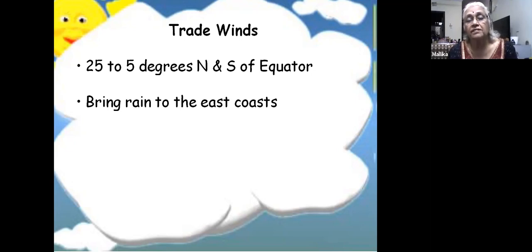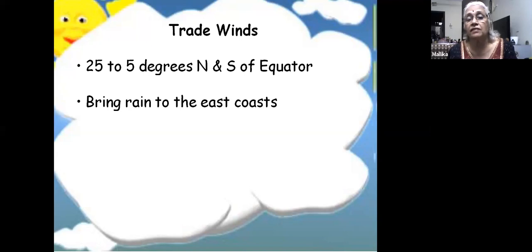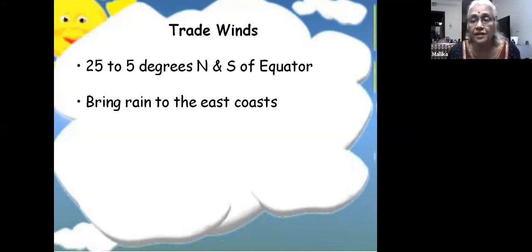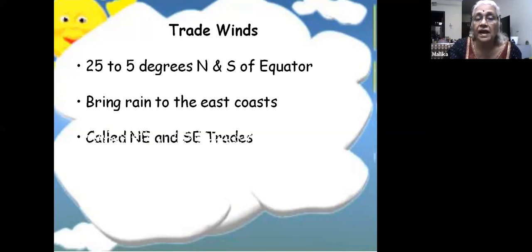Starting from India moving westward through Saudi Arabia and the Gulf countries into Africa, the whole region is a hot desert. Eastern India is not a hot desert - it gets over 50-60 cm of rainfall even bordering the Thar Desert, and rainfall increases further east. That is because of the monsoon, which is related to the trade winds but is a periodic wind, not a prevailing wind. The trade winds blow from 25 degrees to 5 degrees north and south, as northeast and southeast trades.